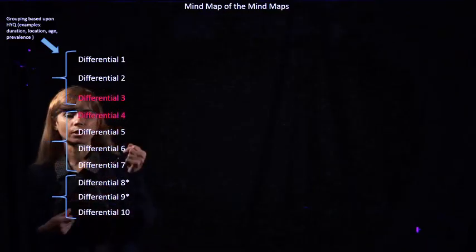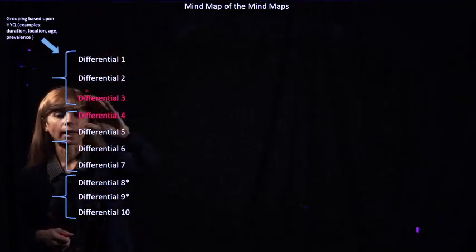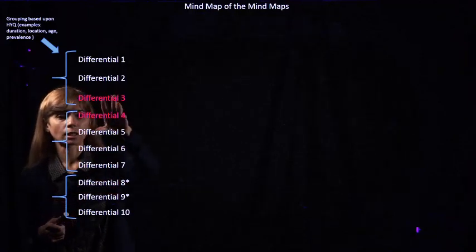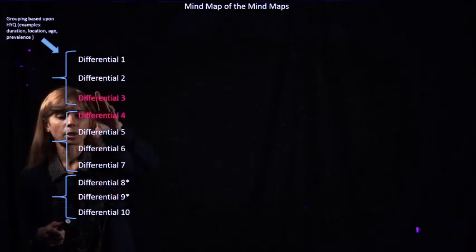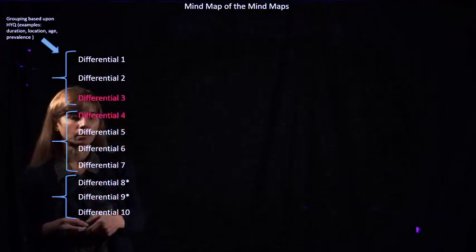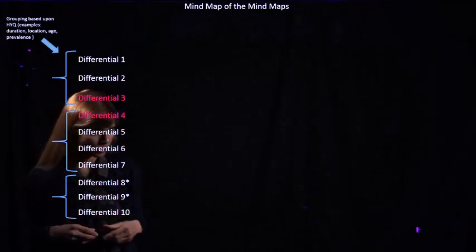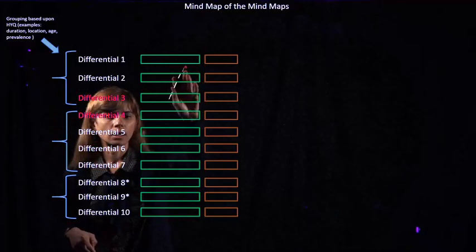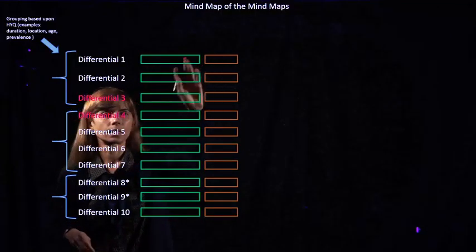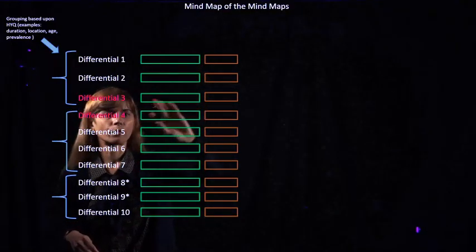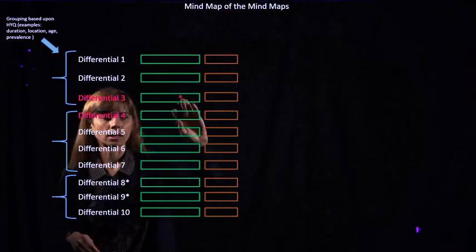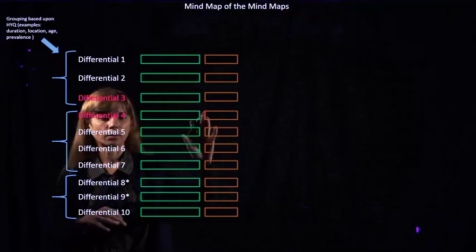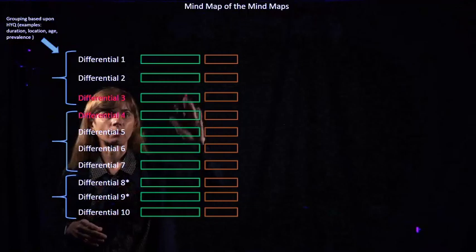You can see that some of the differentials here in this mind map are red, a different color. That is basically done for a reason so that we pay attention to these in particular whenever we are making sure that there is not a red flag situation or red flag diagnosis. Next to the differentials list, you'll see a whole bunch of symptoms and signs listed in front of all the differentials or diagnoses.